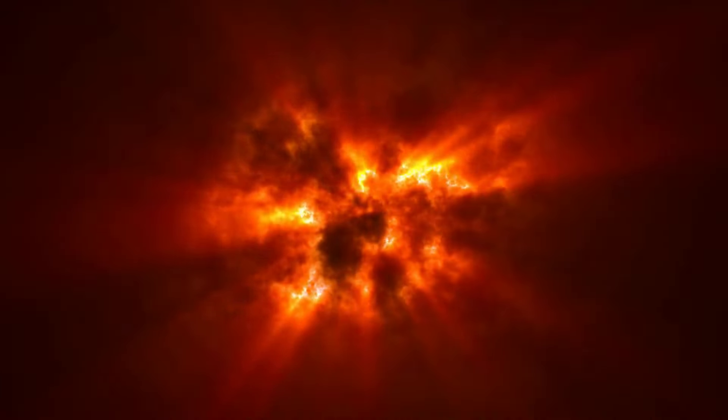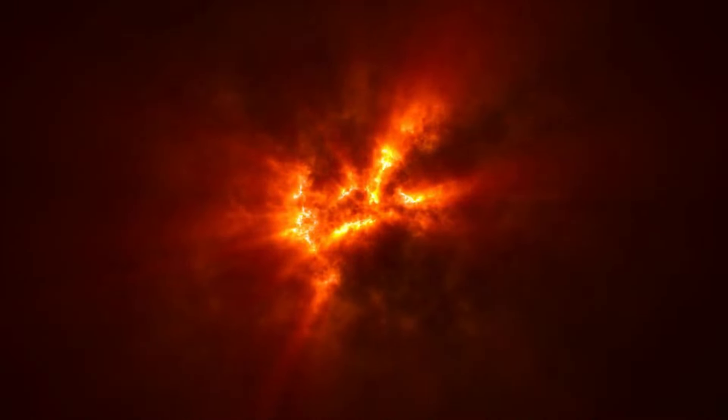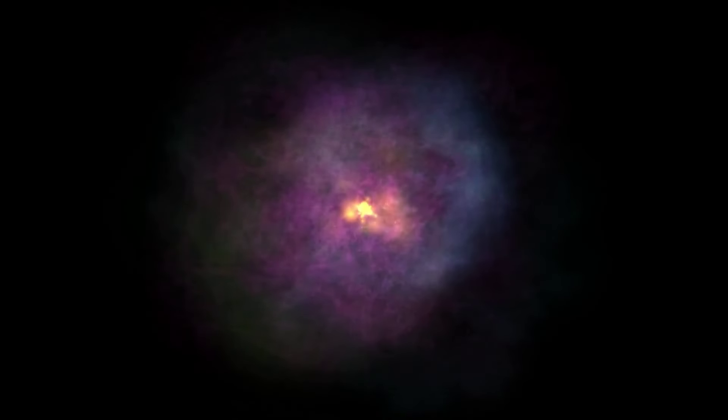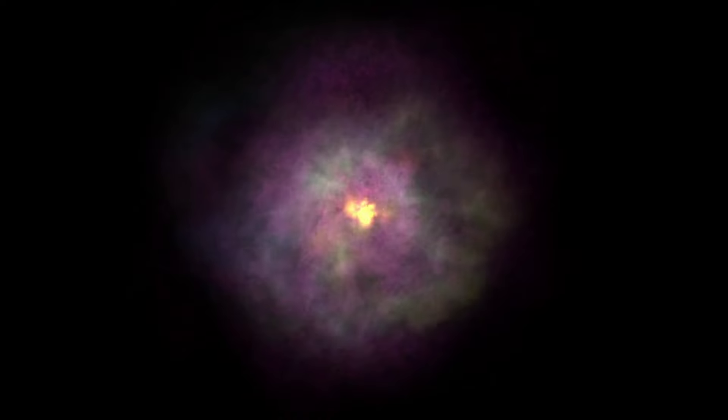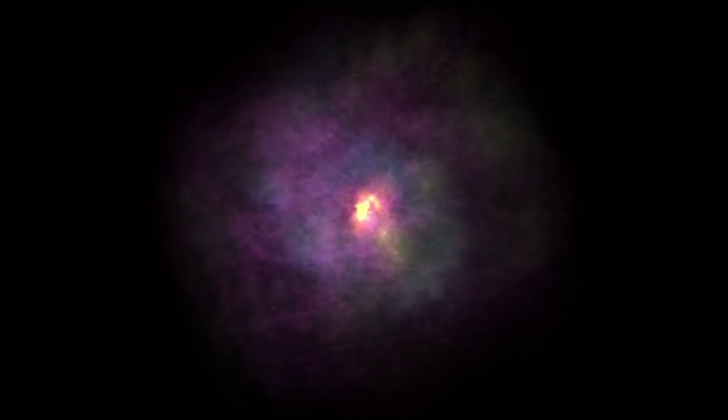The core, however, contracts and heats up, sparking hydrogen fusion in surrounding shells. For lower-mass stars, this phase is a prelude to shedding outer layers, forming beautiful planetary nebulae, eventually leaving behind a white dwarf. The swelling red giant is a signal, a spectacular curtain raise to the star's impending transformation and ultimate conclusion.